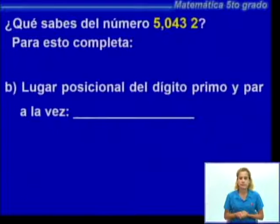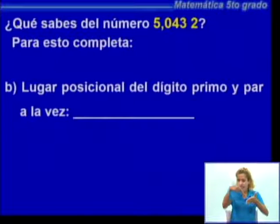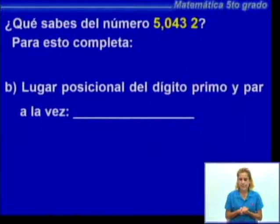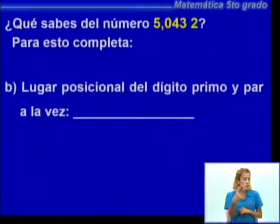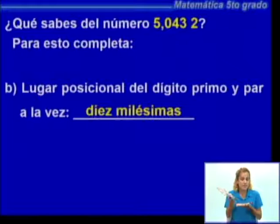En el caso del inciso B, dice el lugar posicional del dígito primo y par a la vez. El lugar posicional es el orden que ocupa el número, el lugar que ocupa el dígito en la tabla. Fíjense que nos dicen el dígito que es primo y par a la vez. Recuerden que los números primos son los que solo son divisibles por uno y por sí mismos. El dígito que es primo y par a la vez es 2, y el 2 ocupa el lugar de las diezmilésimas.